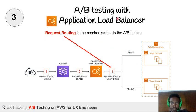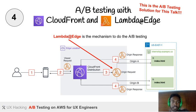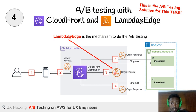The third way is using an Application Load Balancer, where the key mechanism is request routing with query strings. We attach test A and test B, which route to target A and target B respectively. The fourth and final way — which is what we use at ExamPro — is CloudFront and Lambda@Edge, where Lambda@Edge is the key mechanism for AB testing.